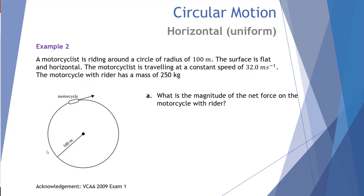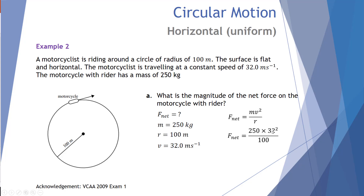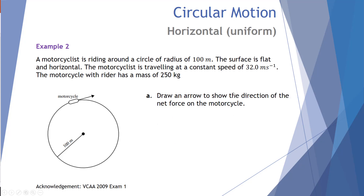Example two: a motorcyclist is riding around a circle of radius 100 meters on a flat, horizontal surface at a constant speed of 32 meters per second. The motorcycle with rider has a mass of 250 kg. Part a: what is the magnitude of the net force? Using F_net = mv²/r: mass is 250 kg, speed is 32 m/s, radius is 100 m. Substituting in gives a net force of 2560 newtons.